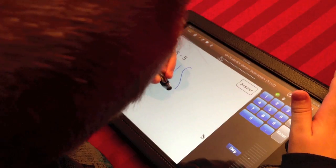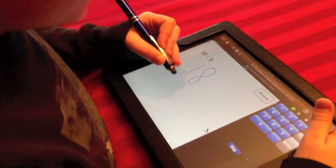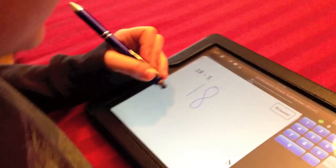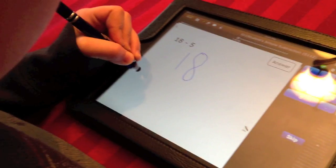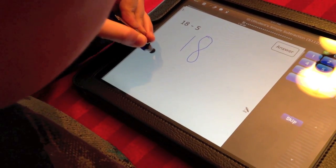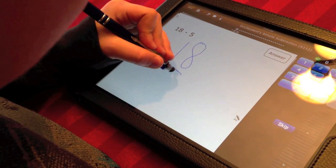So I write 18. And you always put the number on the bottom when you're subtracting. Sometimes that happens.